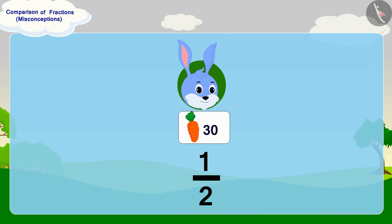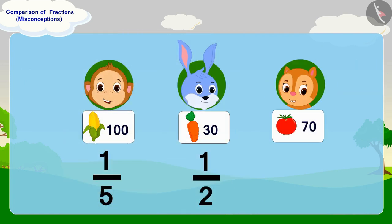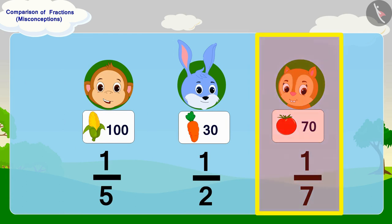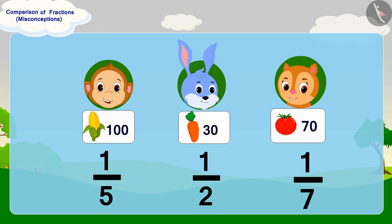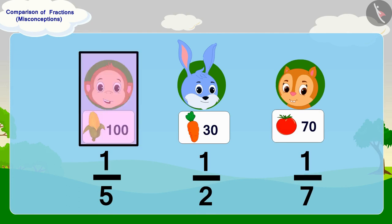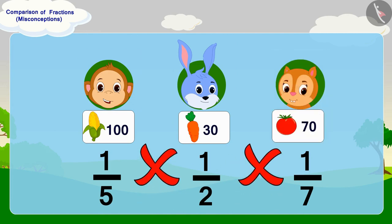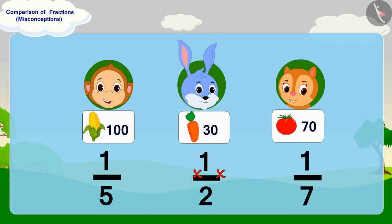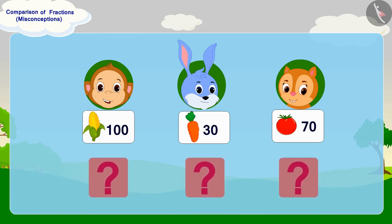But here these are different items whose quantity is also different — half of 30 carrots, one-fifth of 100 corns, and one-seventh of 70 tomatoes. The amounts of vegetables given by Babban, Bunny, and Chanda are different, therefore we cannot tell who has given more vegetables by just comparing the fractions.